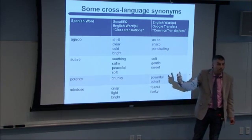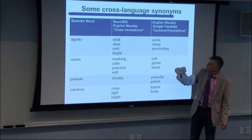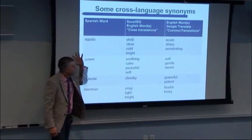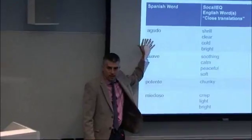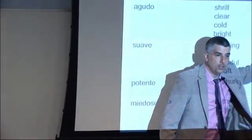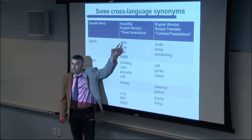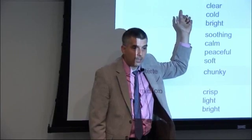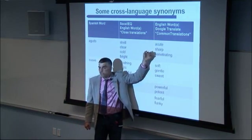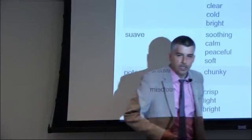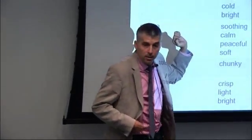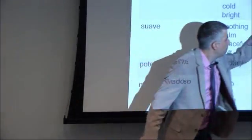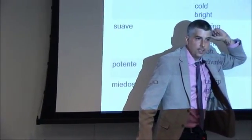I picked some Spanish words and compared: according to Social EQ — measuring how similar EQ curves are — here are close words in English, versus what Google Translate listed as common translations. For "agudo," Social EQ's top translation is "shrill," which Google lists as uncommon — but makes sense since our tool is focused entirely on sound. For "suave" — as in rico suave — we get soothing, calm, peaceful, soft, with nice agreement. For "potente" to "chunky": powerful and potent are Google's translations, which are what I'd have said too.